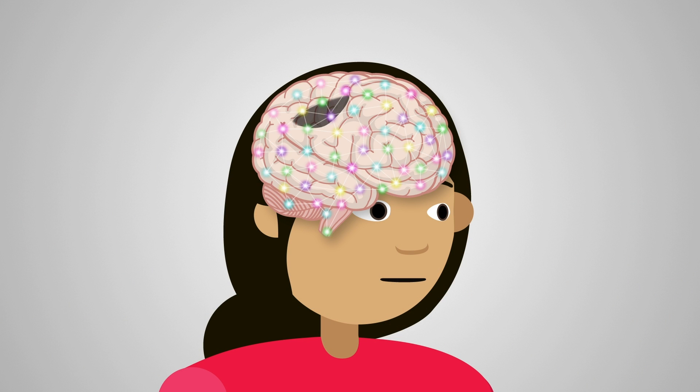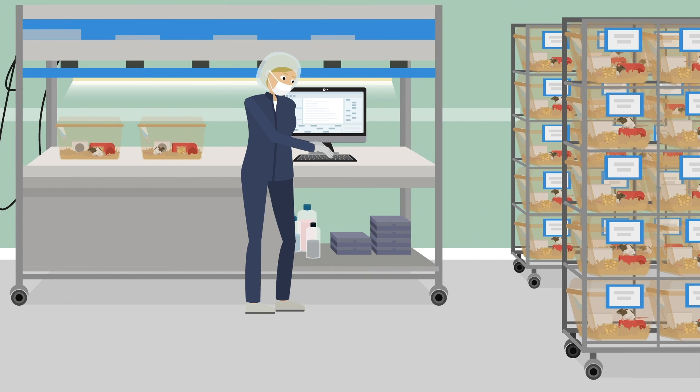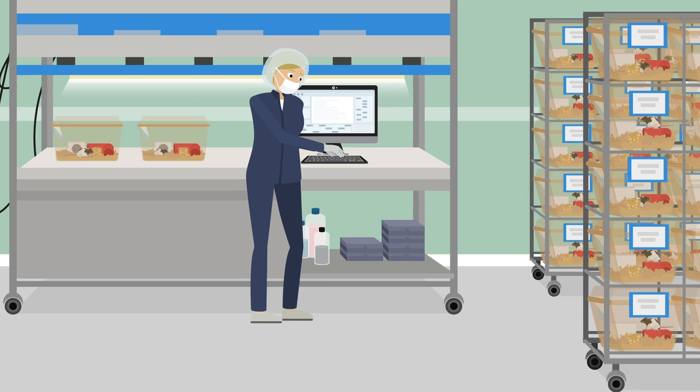When a structure fails, it can cause widespread disruption to the system. To understand brain damage, we must understand brain function. An effective way to do this is with animal models.